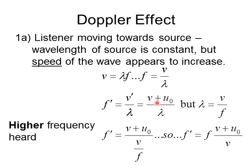When two objects move toward each other, we use the relative velocity — adding the two speeds together because the wave appears faster. So the new velocity is V plus U-sub-O, where V is the original wave speed and U-sub-O is the speed of the observer. Converting wavelength into terms of original frequency using lambda equals V over F, and substituting and rearranging, we arrive at the Doppler equation.